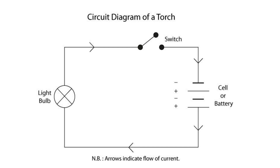Let's take a look at this circuit diagram of a torch. This diagram uses symbols to show how the electrical parts are connected. The light bulb represents the part of the torch that lights up when electricity flows through it. A switch controls whether the circuit is open or closed. The cell or battery symbol represents the power source — the long line is the positive terminal and the short line is the negative terminal. The lines connecting all the components represent the wires. Electricity flows from the positive terminal of the battery, through the switch, into the bulb, and back to the negative terminal.